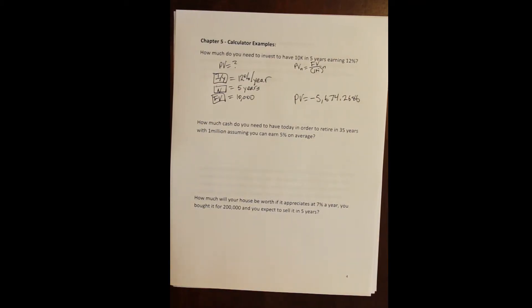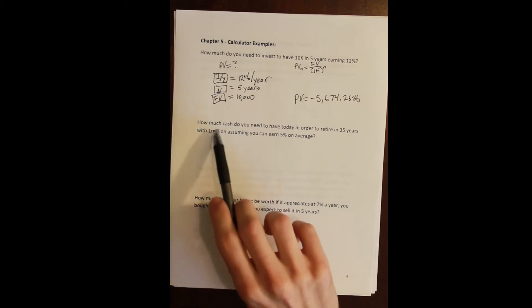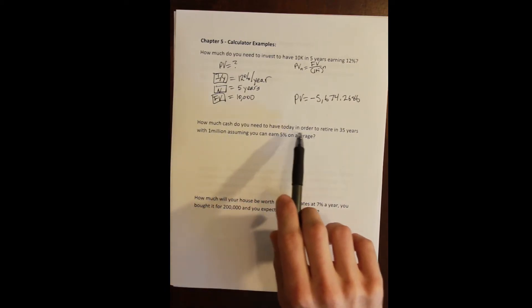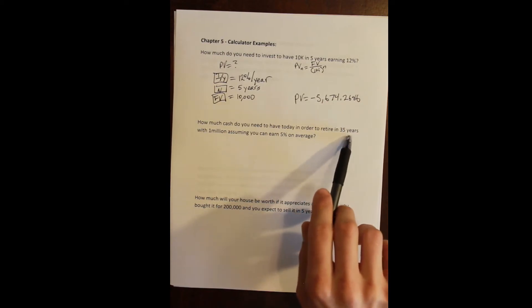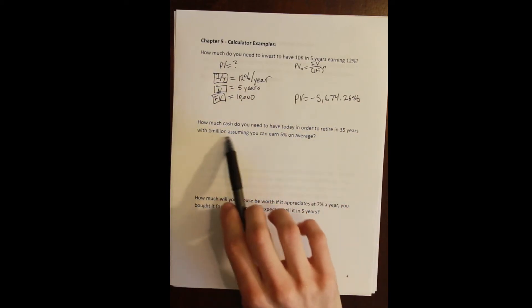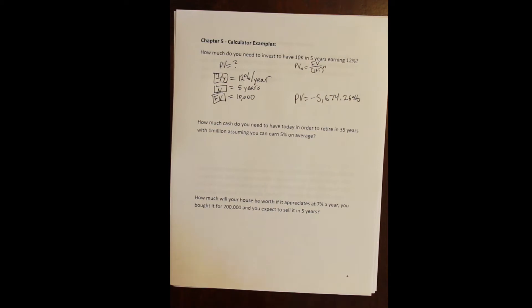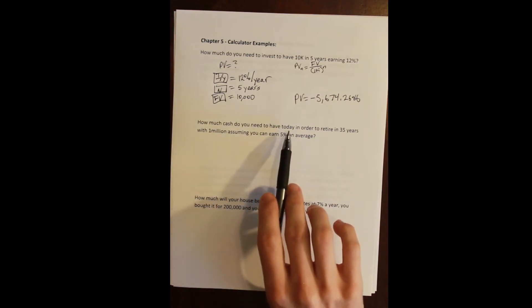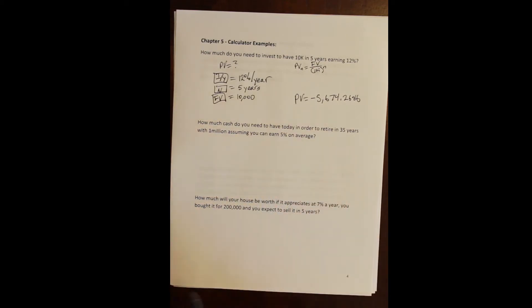Okay, next question says how much cash do you need to have today in order to retire in 35 years with $1 million, assuming you can earn 5% on average? First thing we want to do is try to figure out what this problem is asking for. We have one of our giveaways: how much cash do you need to have today in order to retire at some point in the future, 35 years in the future, with a million dollars. So we want to know how much do I need to invest now, presently, in order to have a million dollars 35 years in the future. We have a present value problem.